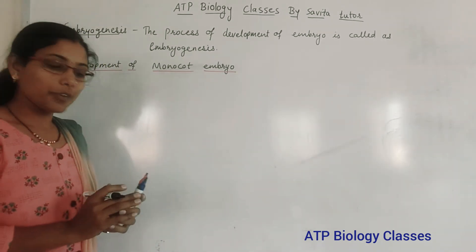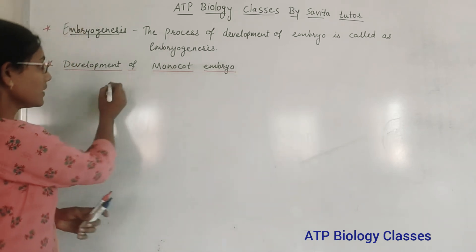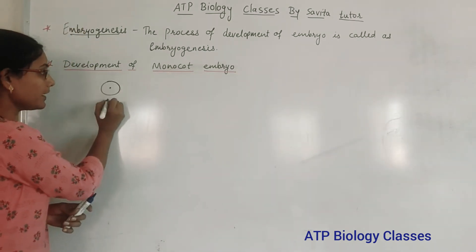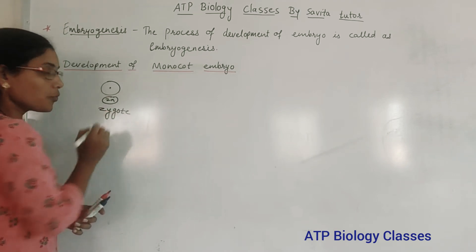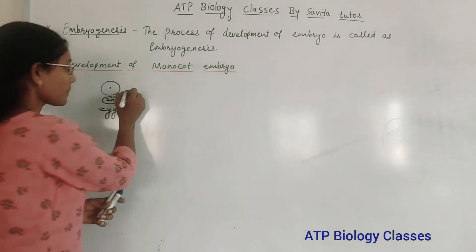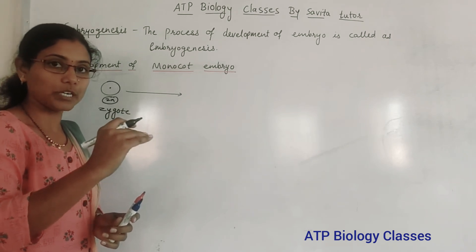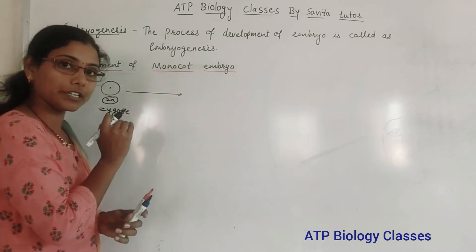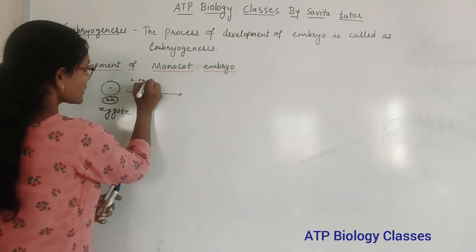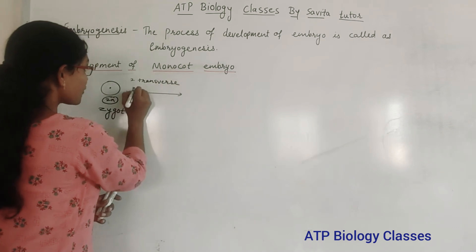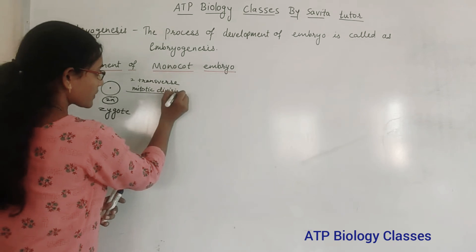The embryo always develops from a single cell, that is the zygote, which is a diploid cell. The zygote is a single cell which is going to divide transversely. Two transverse mitotic divisions will take place.